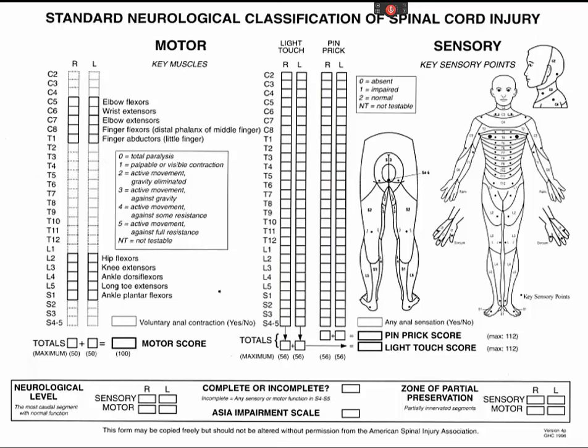Motor strength and sensory testing is performed. When people are injured, they are often told they have an injury at a given spinal cord level with a qualifier indicating severity, such as complete or incomplete. They may be classified according to the ASIA classification as ASIA A, B, C, or D, and may have bony fracture or involvement of one or more vertebral levels.